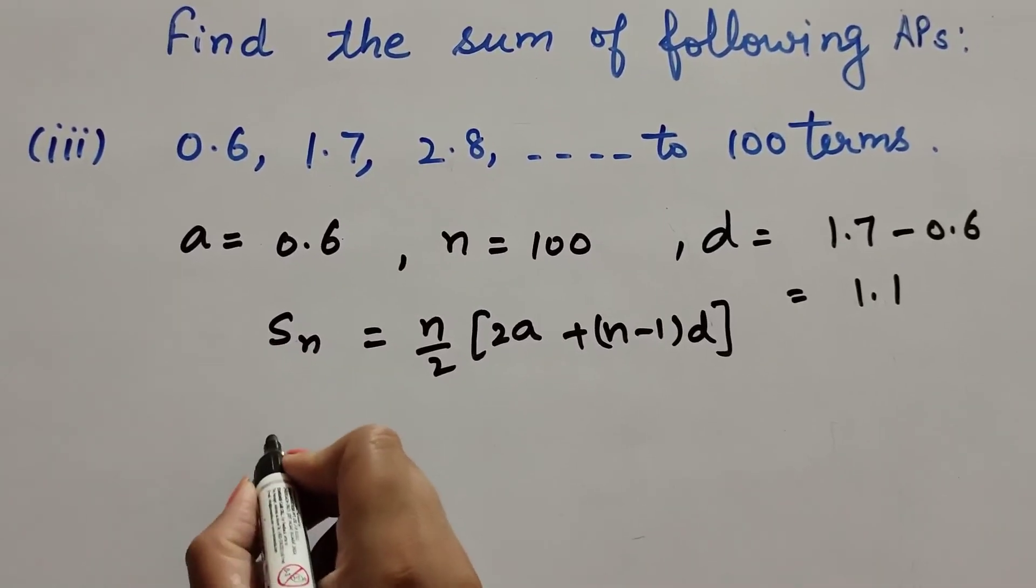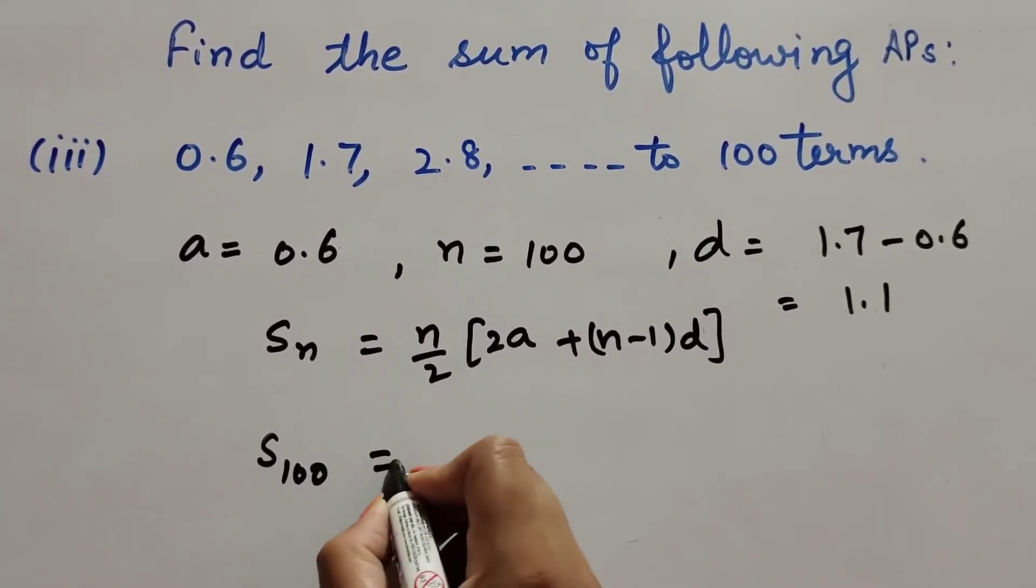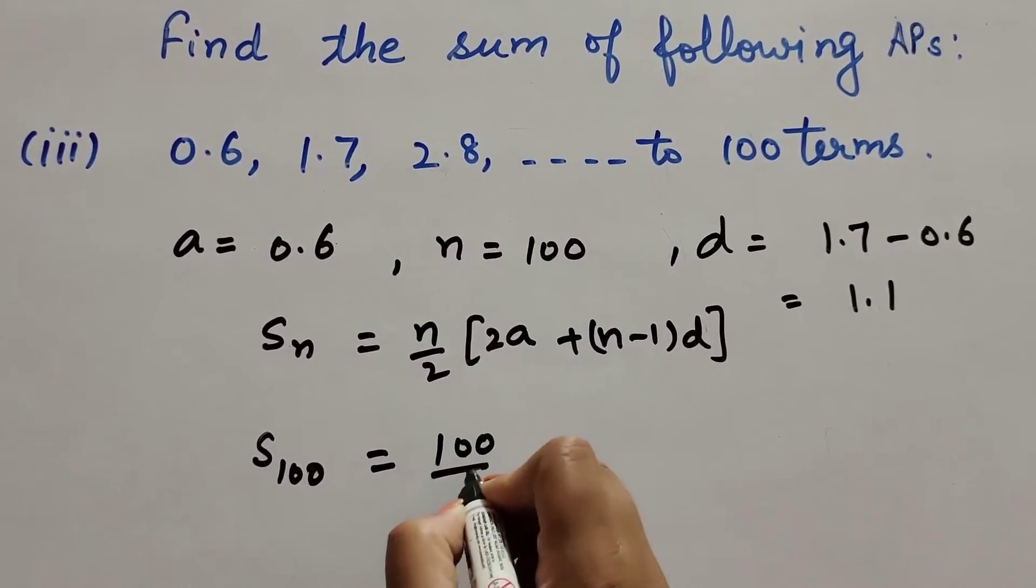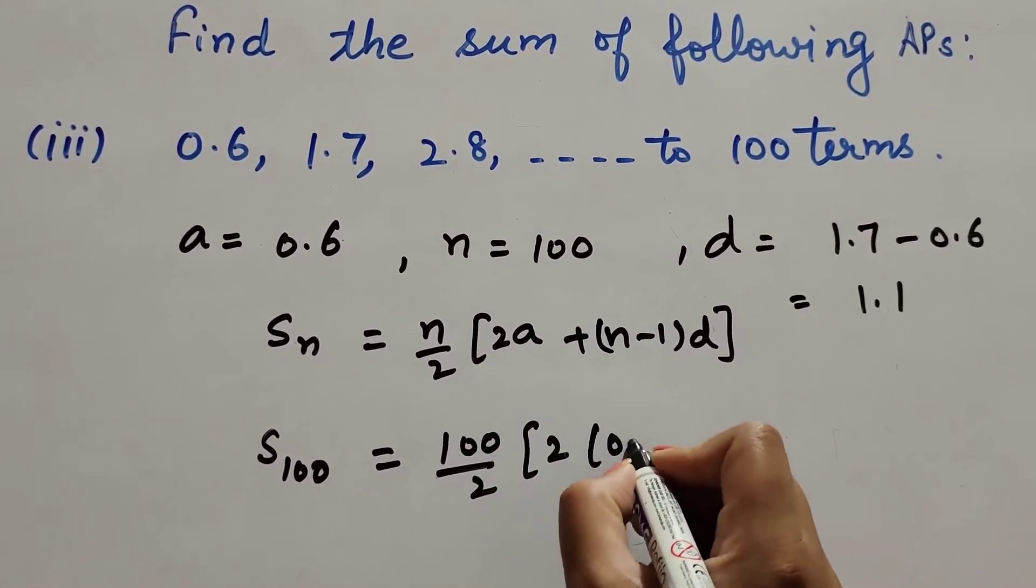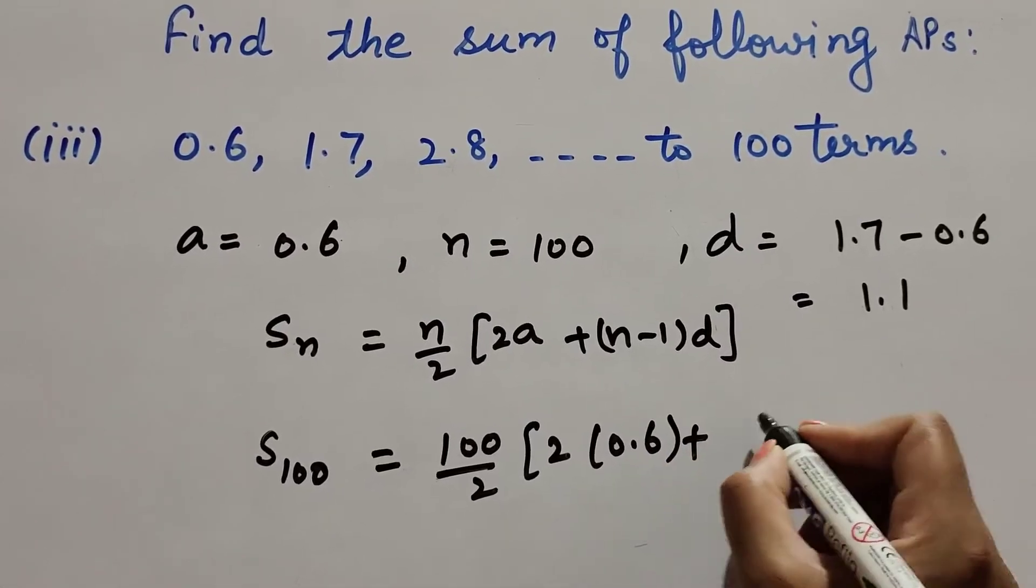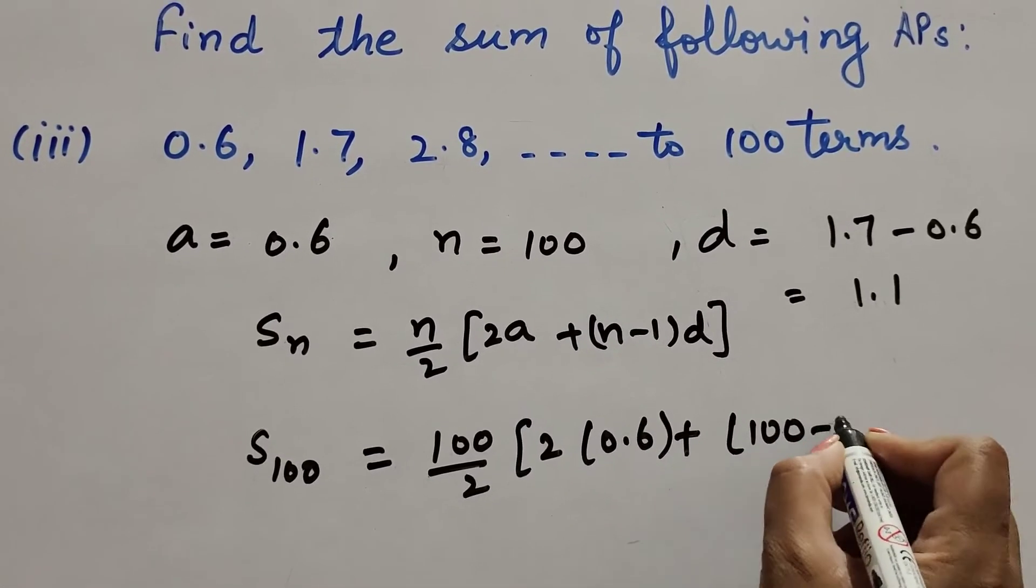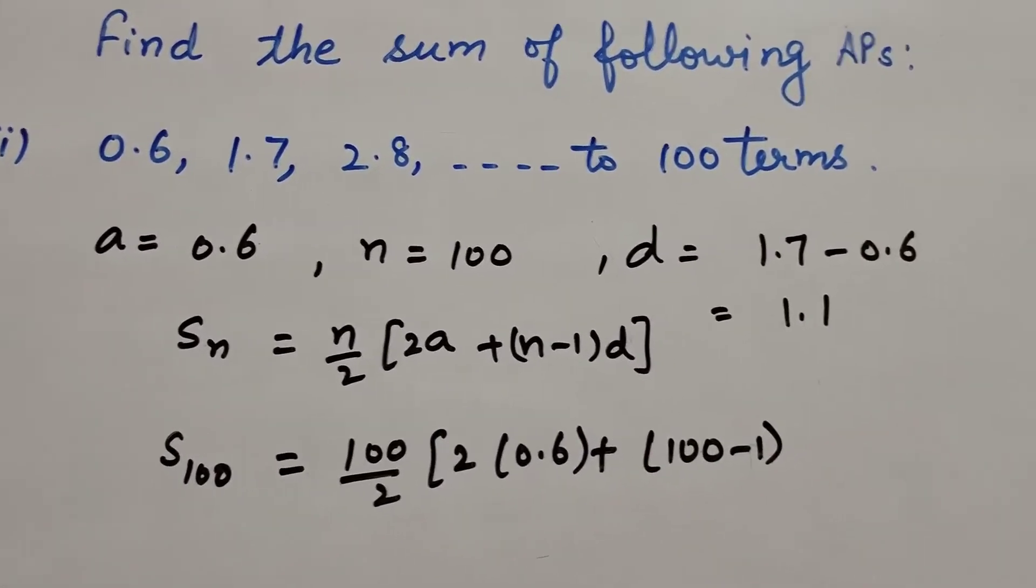Since n is equal to 100, we find the sum of 100 terms equal to n over 2, n is 100 over 2, into 2a, a is equal to 0.6, plus n, n is 100, minus 1 into d, d is 1.1.